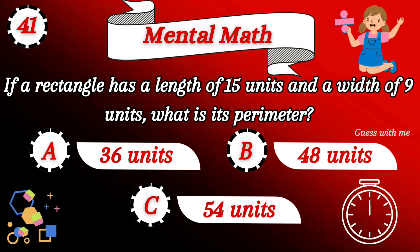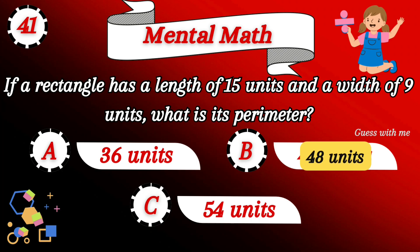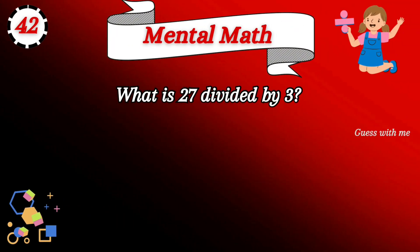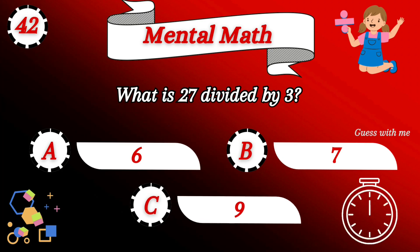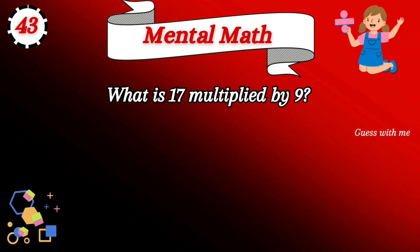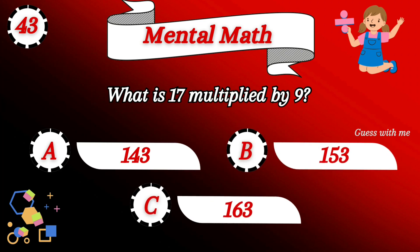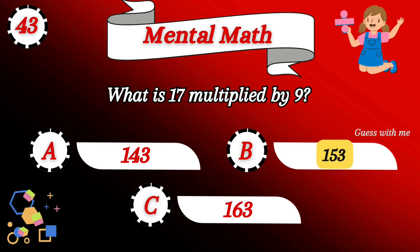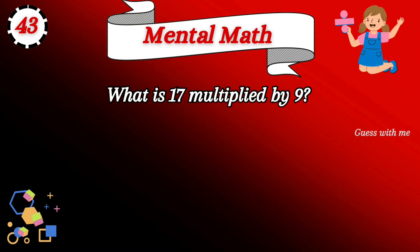Keep counting your answers. Option B is the right answer. The next is: what is 27 divided by 3? Your next question: what is 17 multiplied by 9? The right answer is 153.